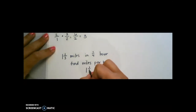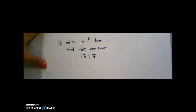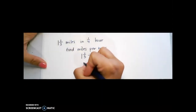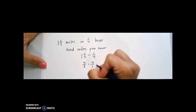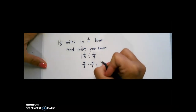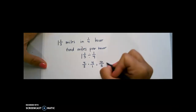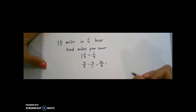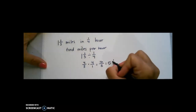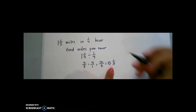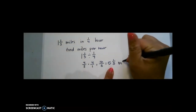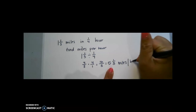So 1 and 1 third divided by 1 fourth. We would make this an improper fraction, so that would be 4 over 3, times — and then flip our second fraction. 4 times 4 is 16, and 3 times 1 is 3. 3 goes into 16 five times with 1 left over. So that means he can go 5 and 1 third miles per hour.